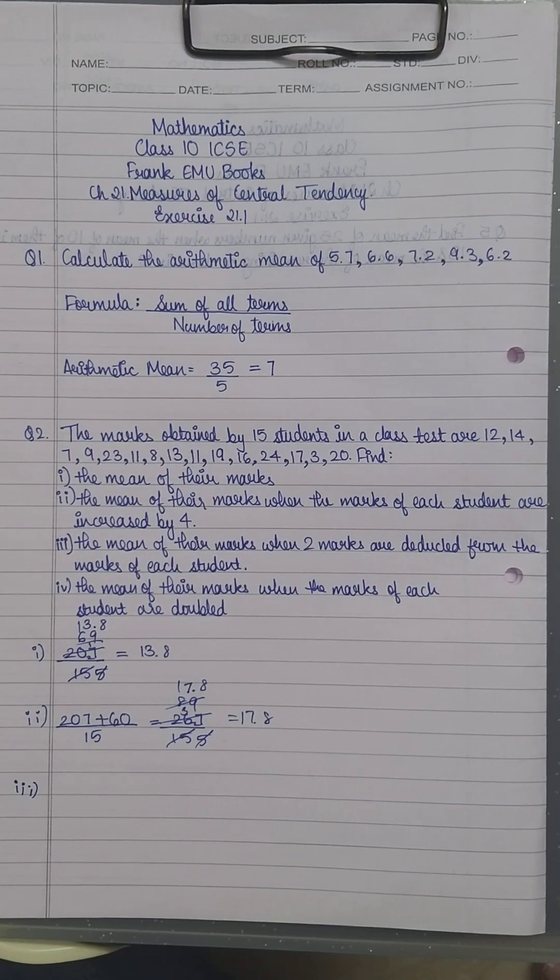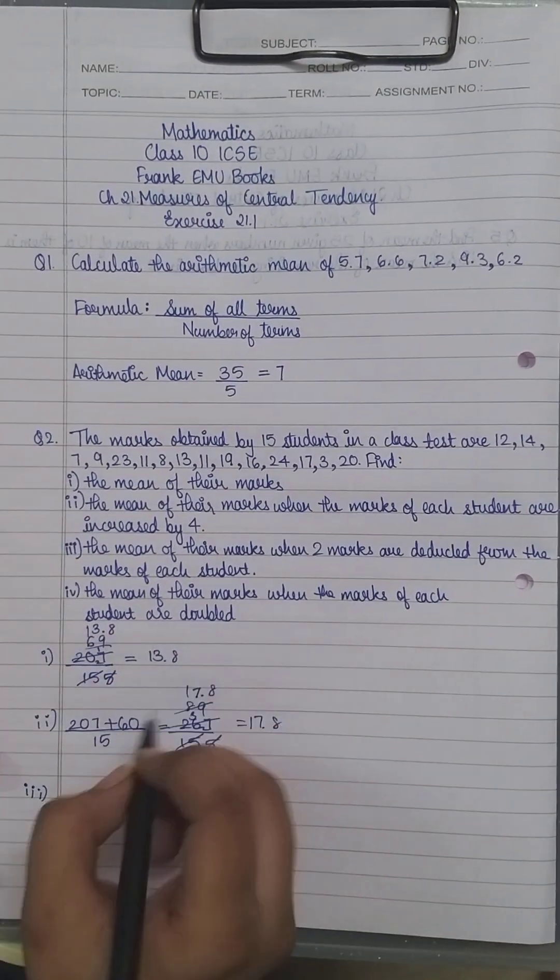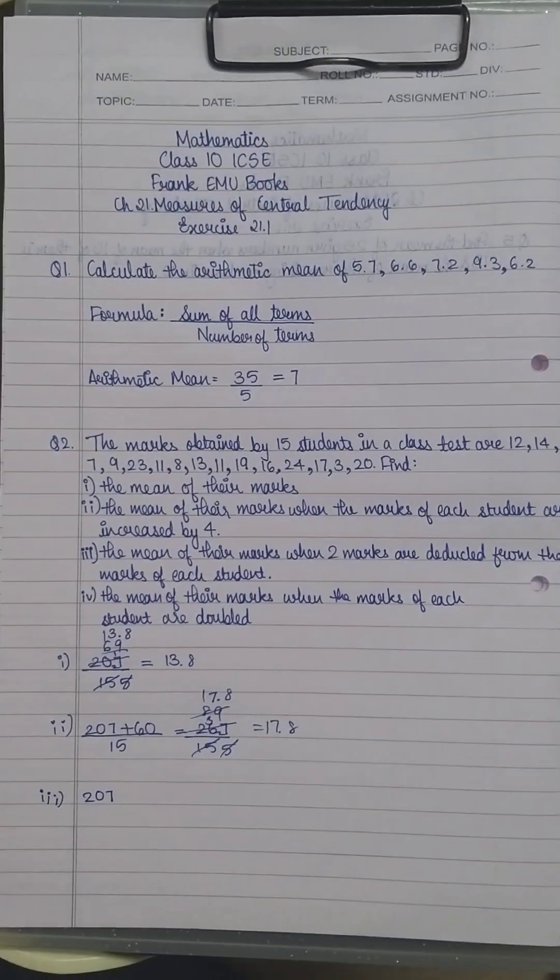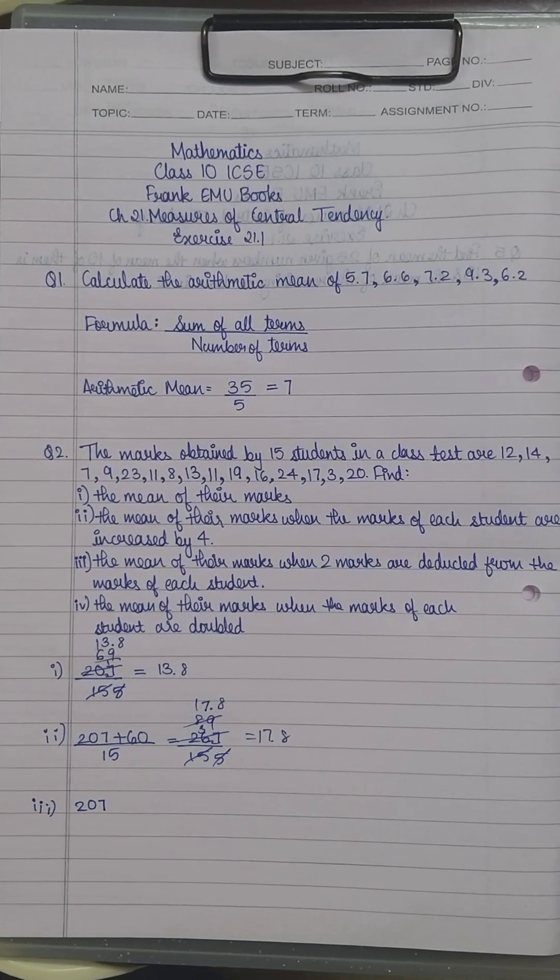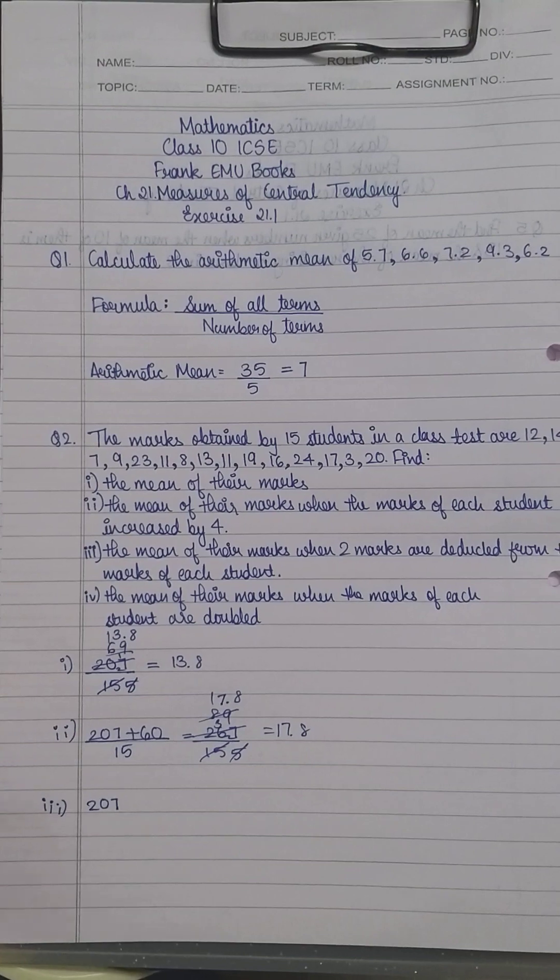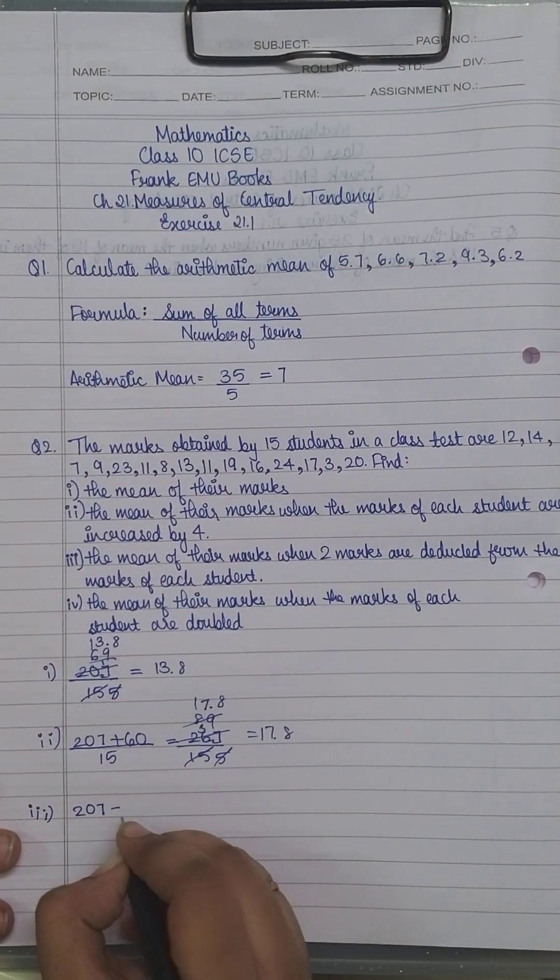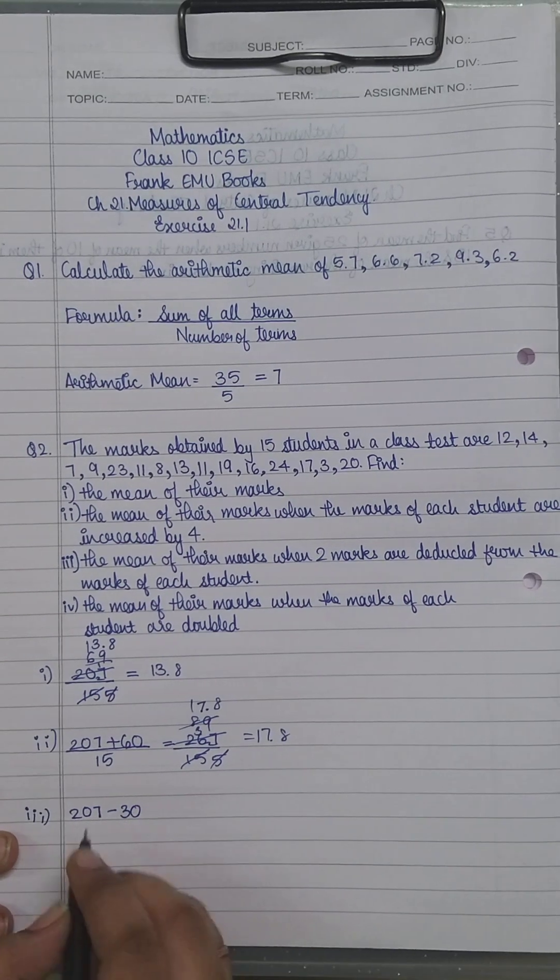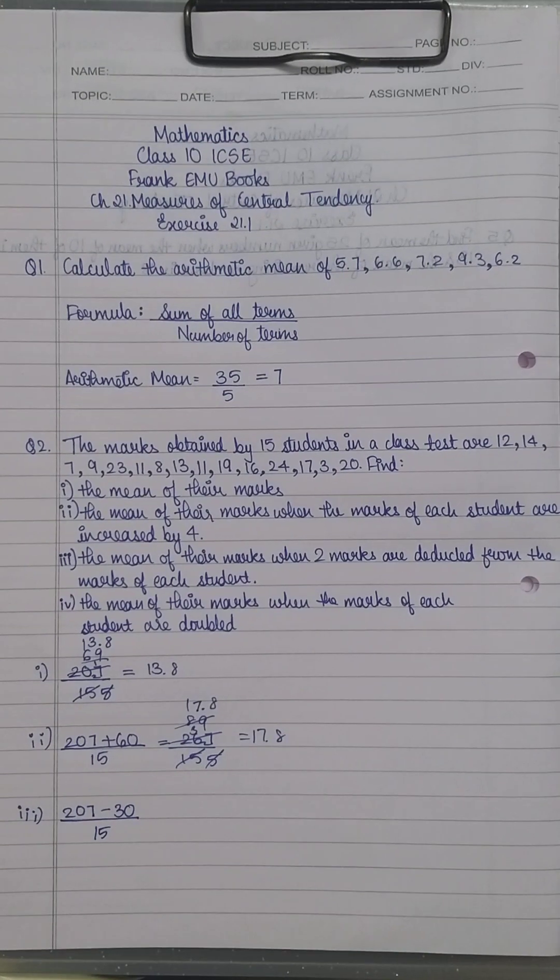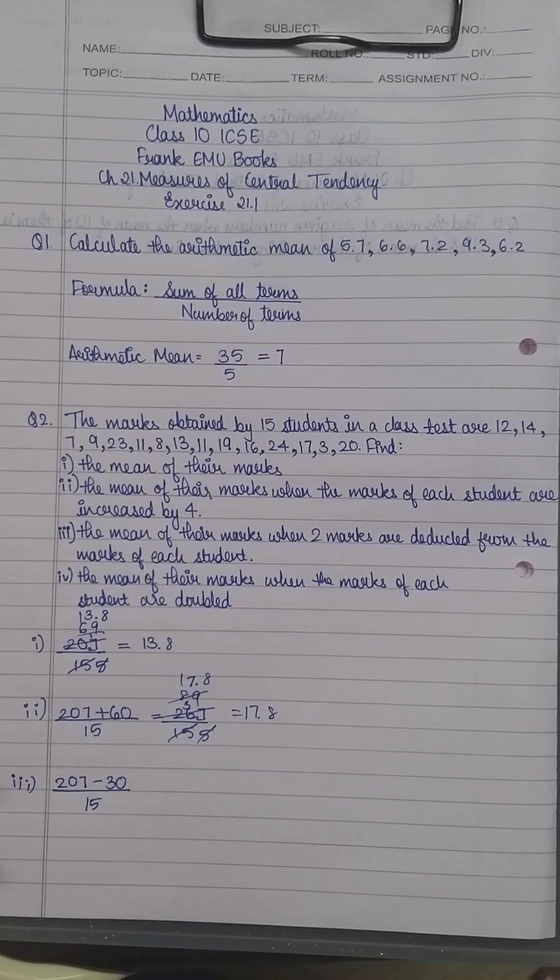Sub-question 3: find the mean when two marks are deducted from each student's marks. You already have the sum initially. If two marks are deducted, that means 15×2=30 marks are deducted from the sum, because it's two marks from each student. So you subtract 30. The number of terms is still 15.